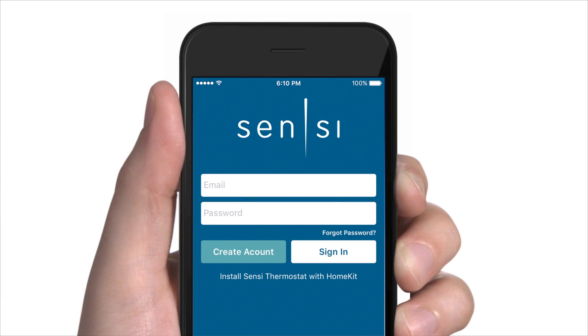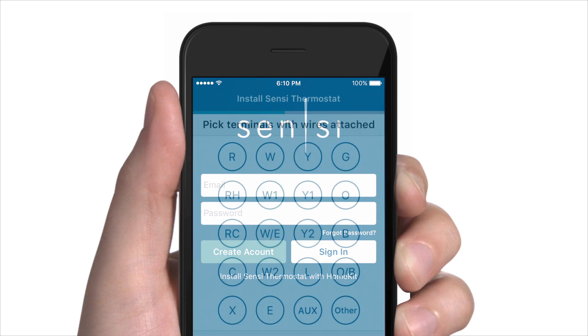Now that you have a functioning C wire, you can use the Sensi mobile app to complete your installation. Once back in the Sensi mobile app, when selecting what terminals have wires attached, you can now select C to reflect the new C wire you just added.